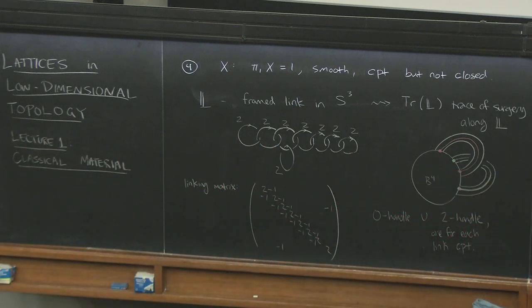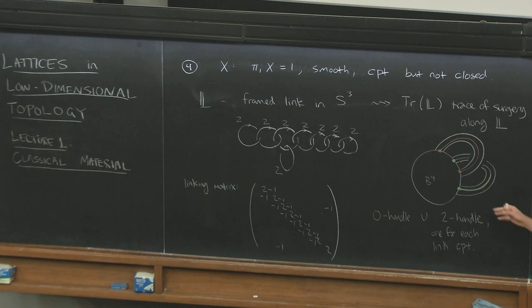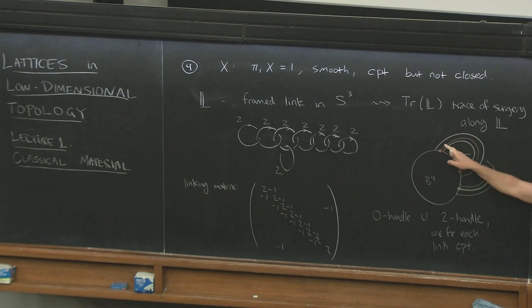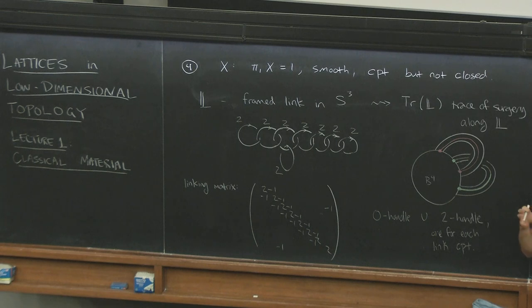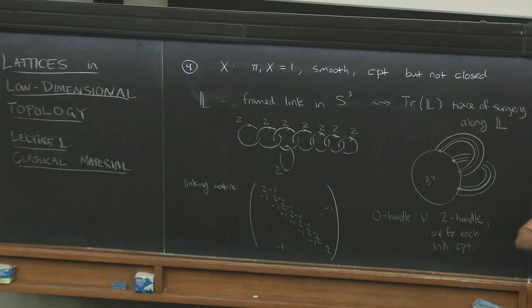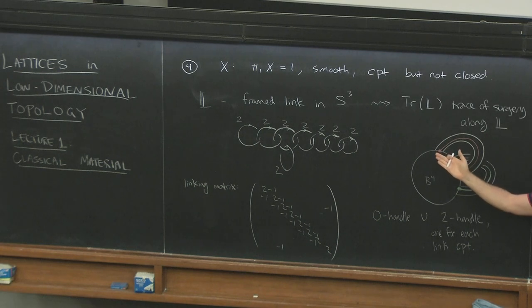In words, what I've taken is a zero-handle unioned with a two-handle for each link component. When you attach a two-handle along a link component, there's essentially an integer's worth of different gluings corresponding to the mapping class group of D²×S¹ — how I identify D²×S¹ with the neighborhood D²×S¹ of the link component. That integer's worth of choices is called the framing of the two-handle, and the framing I choose is just chosen to match the integer I wrote down on the link component.